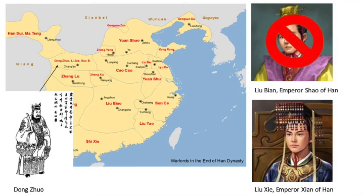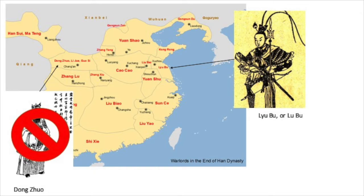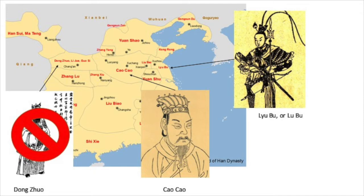The young emperor, Liu Bian, became a puppet of a powerful warlord, Dong Zhuo. Soon after that, Dong Zhuo took away the crown from Liu Bian and granted it to Bian's younger brother, Liu Xie, who would be known as Emperor Xian, the last emperor of the Han dynasty. Liu Bian was then murdered by Dong Zhuo. Because Dong Zhuo's rule was tyrannical, he was assassinated by a united force between Han loyalists and Lü Bu, another warlord. However, neither of them was able to stabilize the situation. Emperor Xian was then controlled by Cao Cao, the warlord based in the central plain.